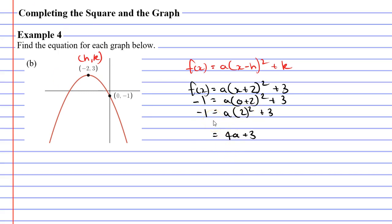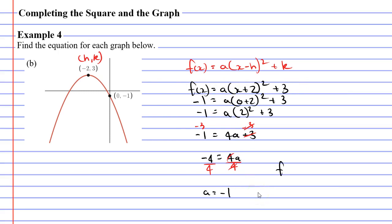So we have 4A plus 3 equaling negative 1. I'm going to subtract 3 from both sides in order to cancel the plus 3. Negative 1 minus 3 gives us negative 4. Now I'm going to divide both sides by 4, and I find that A must equal negative 1. Now I can substitute this value back into my function.